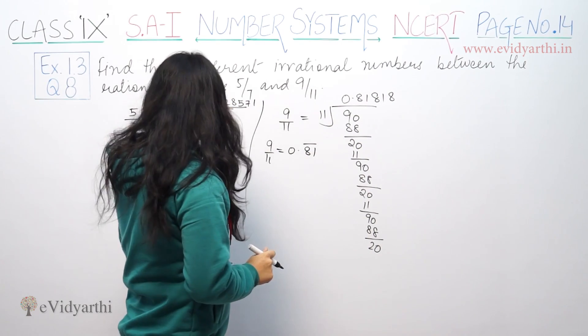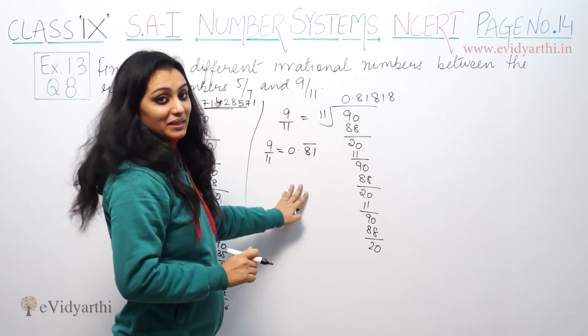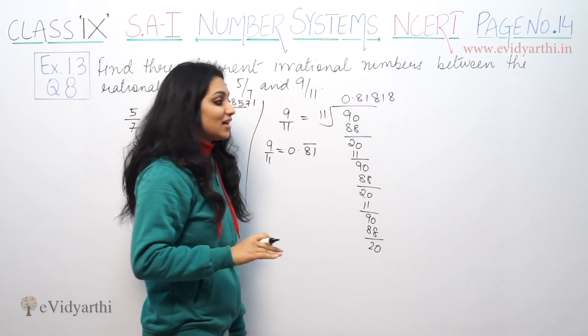So both of these are non-terminating and repeating decimals, which means they are rational numbers. Since we need irrational numbers, we need numbers that are non-terminating and non-repeating.